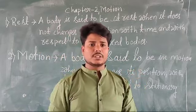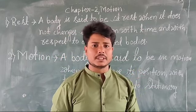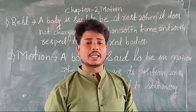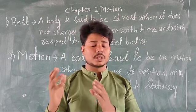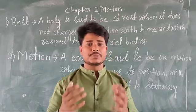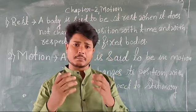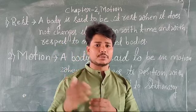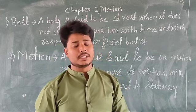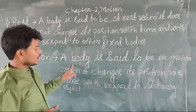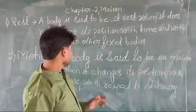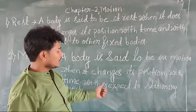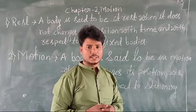So, what is motion? A body is said to be in motion when it changes its position with respect to time as well as with respect to some stationary object. A stationary object means the object that does not change its position — it remains fixed at a constant place, does not change its position with respect to time.